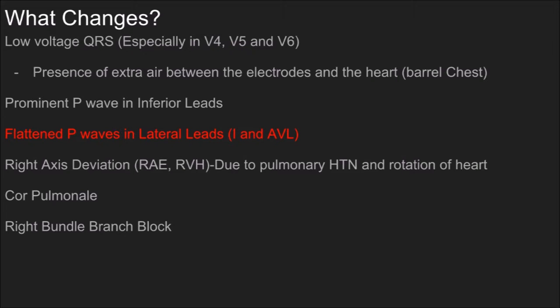You can see right axis deviation, usually due to right atrial enlargement. There's right ventricular hypertrophy, pulmonary hypertension, and other things associated with this disease. The deep breaths and frequent respiration also cause an actual rotation of the heart inside the body.